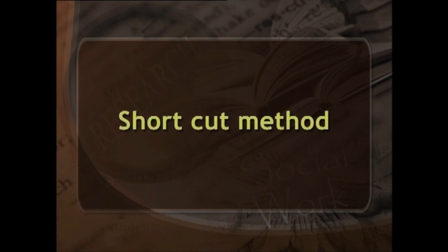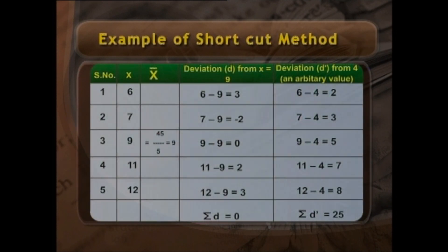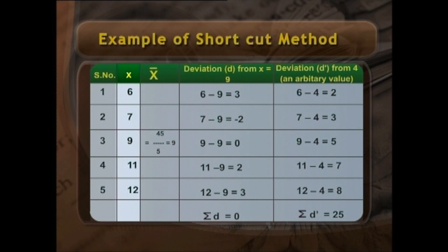Shortcut method: this method is based on an important property of the mean — the algebraic sum of the deviations of the various item values from their mean is always equal to 0. Conversely, the sum of deviations of the various item values from some arbitrary value other than the arithmetic mean will not equal 0. This property can be illustrated from the following example: with 5 items having values 6, 7, 9, 11, 12, the mean x̄ = 45/5 = 9.